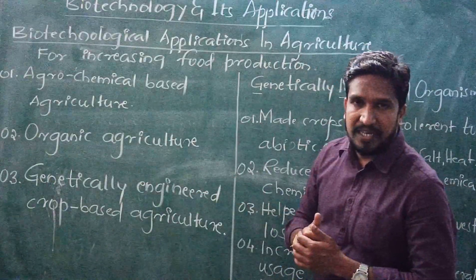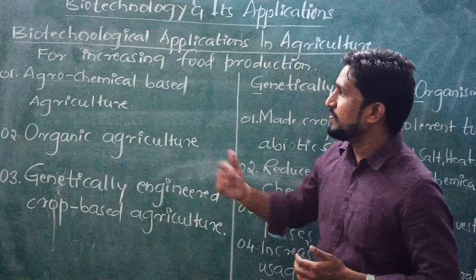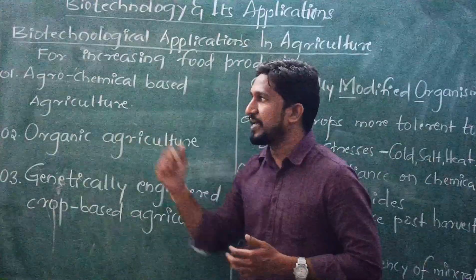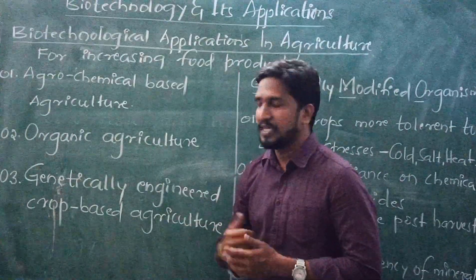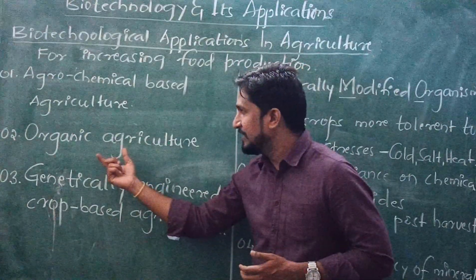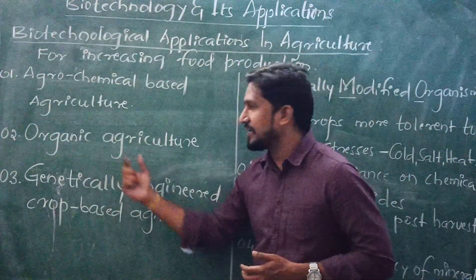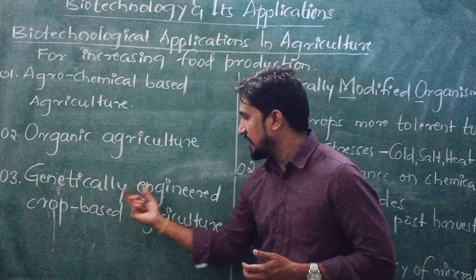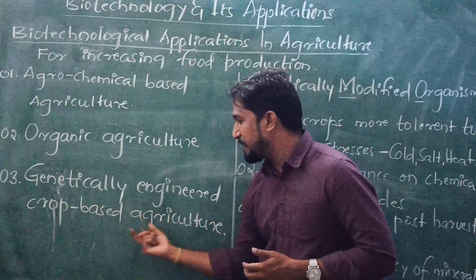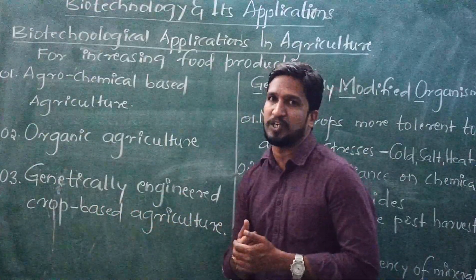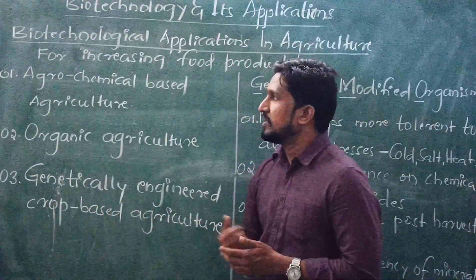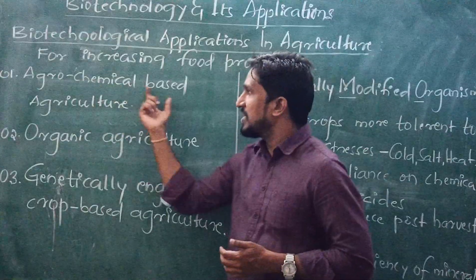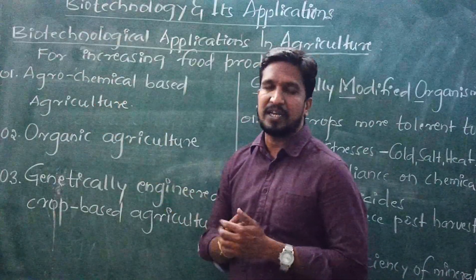There are three important criteria: first, agrochemical-based agriculture; second, organic agriculture; and third, genetically engineered crop-based agriculture.